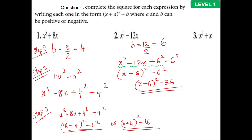There is a question for you to try. In that case, b is going to be 1 over 2, because if you have just x, its coefficient is 1, so b equals 1 divided by 2. Then apply the same steps.